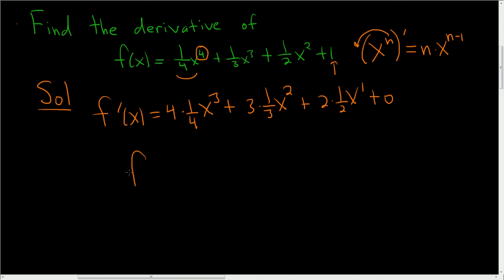The last thing to do is clean it up. So f prime of x is equal to x cubed plus x squared, right? These cancel. And plus x. And that's it.